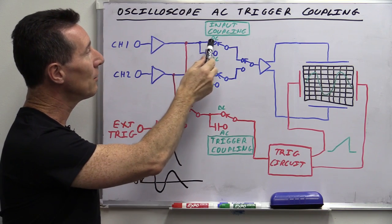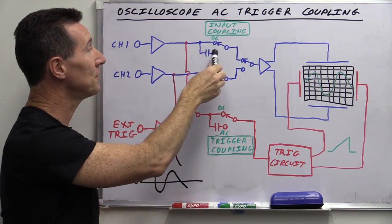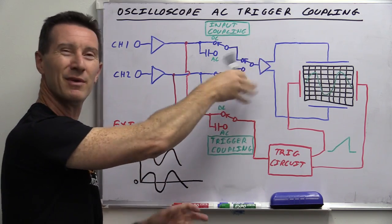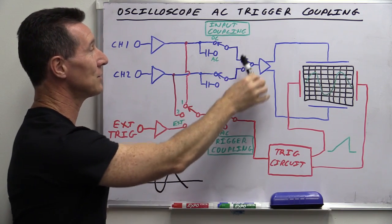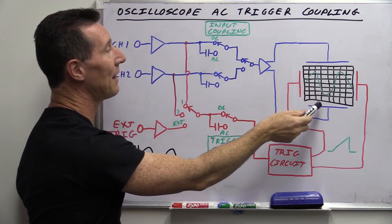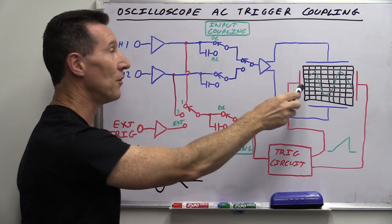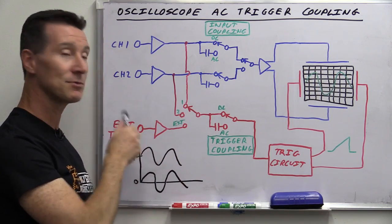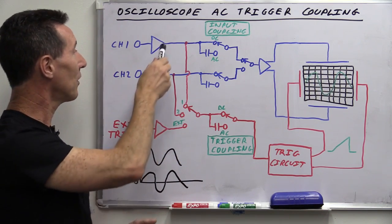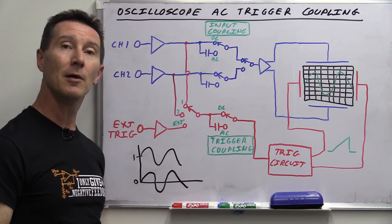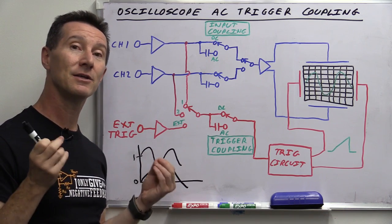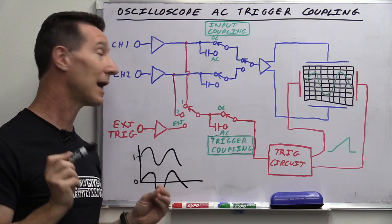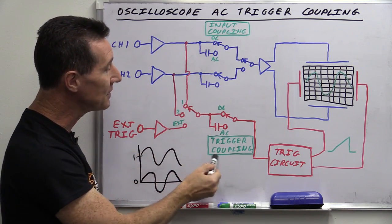So if you've got an input signal that is offset by a DC amount — in this case one volt — if you turn on AC input coupling, it simply removes the DC component like that. Pretty easy, I think everyone understands that. We've got an input amplifier where you can select AC or DC coupling to remove the DC component, and then you can select which channel you want to display. This amplifier drives our vertical plates and moves our waveform up and down in response to the input — duplicated for channel one and channel two.